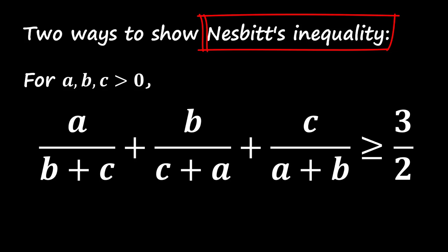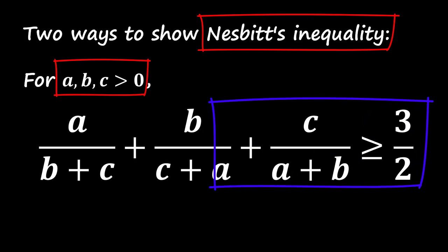Nesbitt's Inequality says that for any positive numbers A, B, and C, the following holds: A over B plus C plus B over C plus A plus C over A plus B is greater than or equal to 3 over 2.